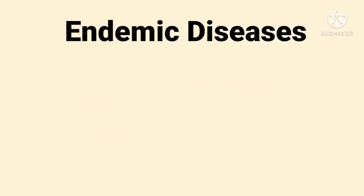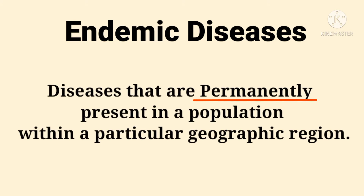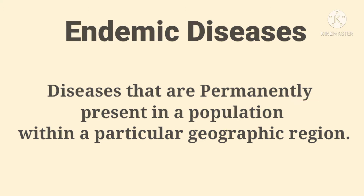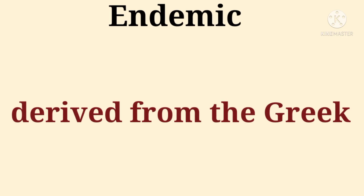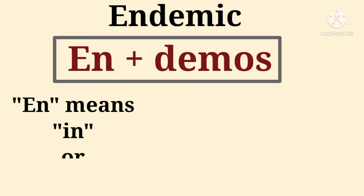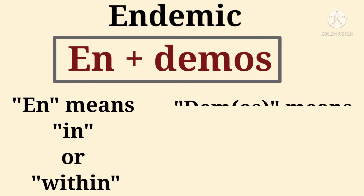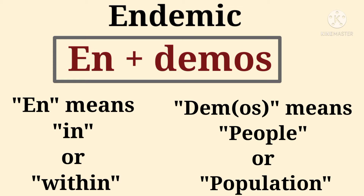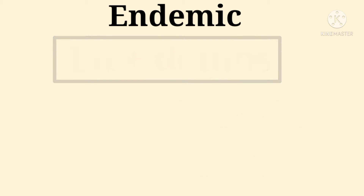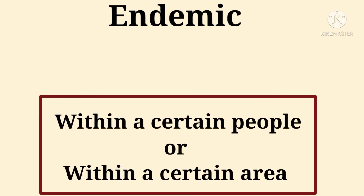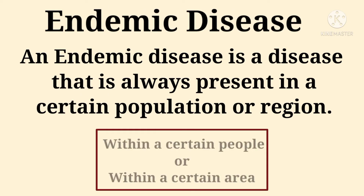Let's start with endemic diseases. Diseases that are permanently present in a population within a particular geographic region are called endemic diseases. The word endemic is derived from Greek — the prefix 'en' means 'in or within' and 'demos' means 'people or population.' So the basic meaning of endemic is 'within a certain people' or 'within a certain area.' An endemic disease is a disease that is always present in a certain population or region.